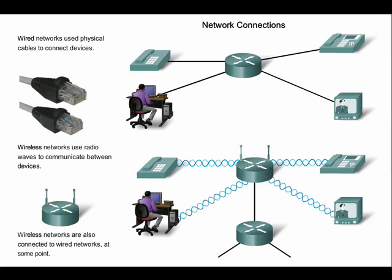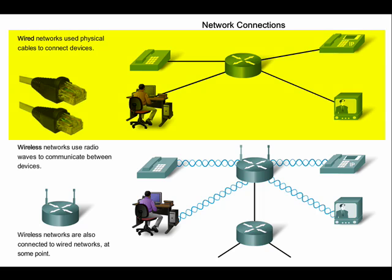The devices in a network must be connected for the network to function. Network connections can be wired or wireless. With wired connections, like the network in this graphic, the medium is either copper, which carries electrical signals, or optical fiber, which carries light signals. Copper media includes cables such as twisted pair telephone wire, coaxial cable, and most commonly what is known as Category 5 unshielded twisted pair or Cat5 UTP cable. Optical fibers, which are thin strands of glass or plastic that carry light signals, are another form of wired networking media.